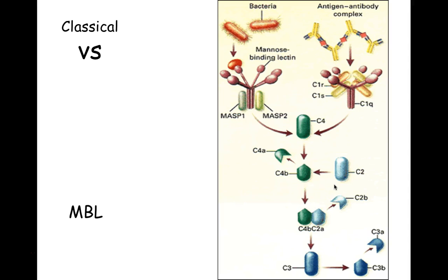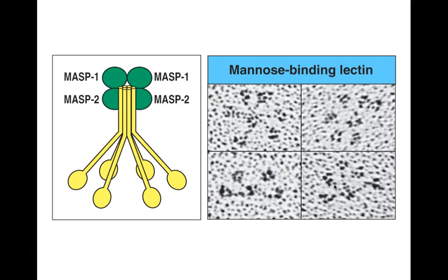MBL has a similar set of enzymes called MASP1 and MASP2 — these are serine protease enzymes. When the lollipop structures of MBL get flexed by attaching to the bacterial cell surface, those serine proteases MASP1 and MASP2 become activated, again cleaving C4 and C2 into large and small subunits, producing the C3 convertase on the bacterial cell surface.